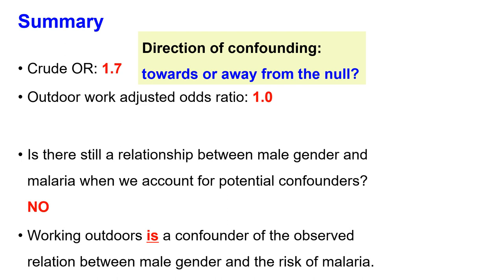Looking at the summary: the crude odds ratio — unadjusted, just looking at gender and malaria — was 1.7. After adjusting for outdoor occupation, the adjusted odds ratio came down close to one. The direction of confounding here was that the unadjusted odds ratio was away from the null, meaning outdoor occupation was overestimating the association between gender and malaria.